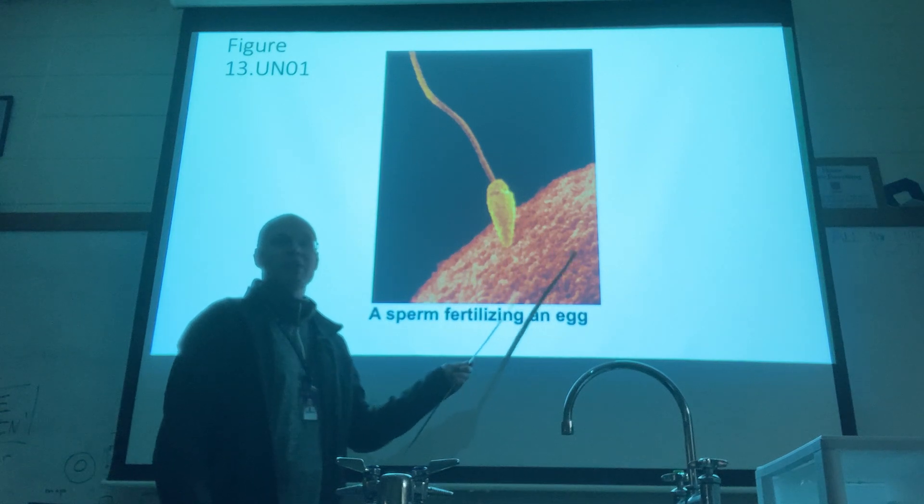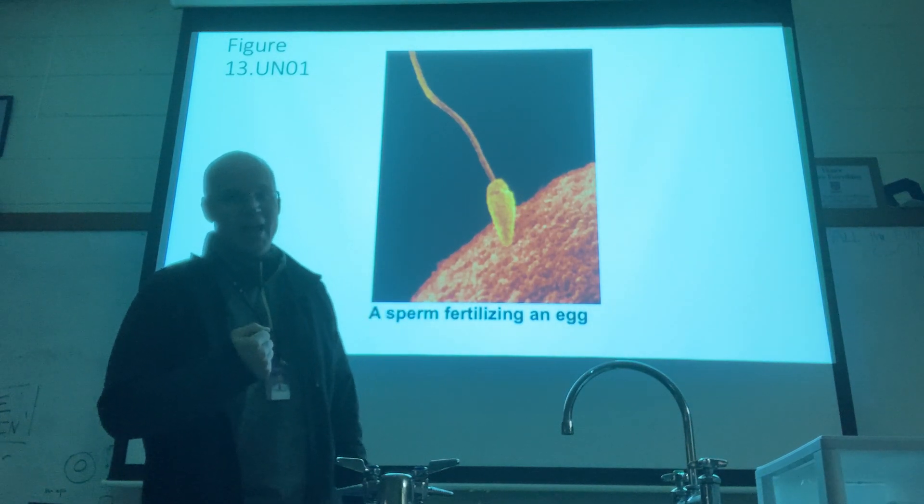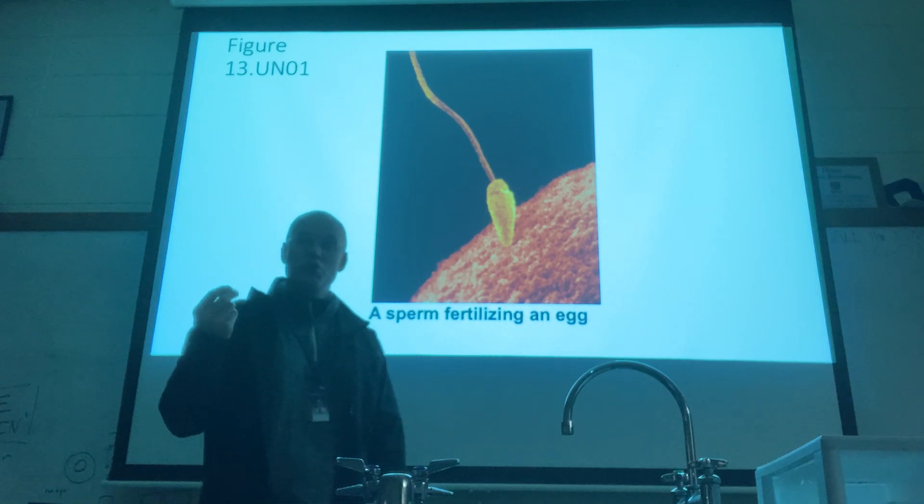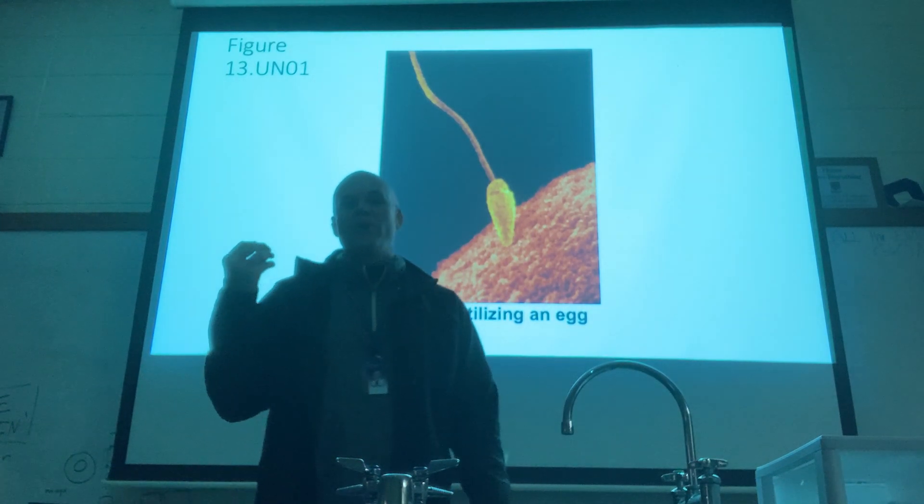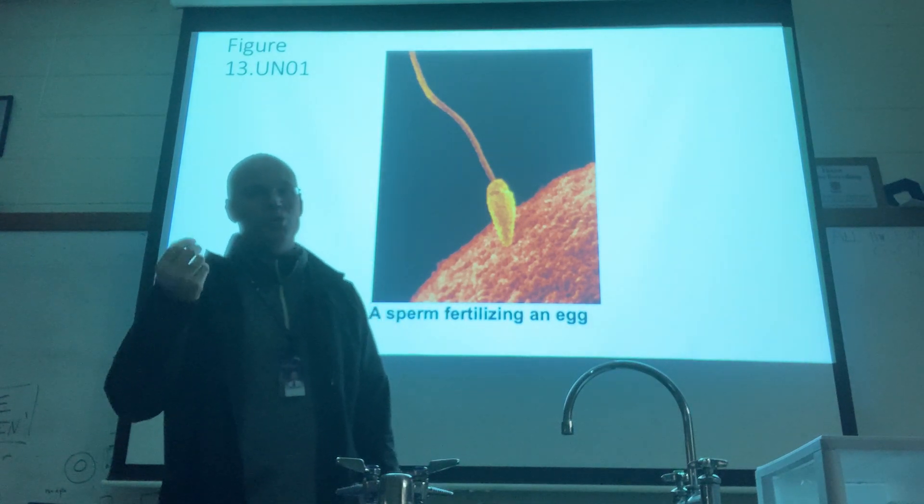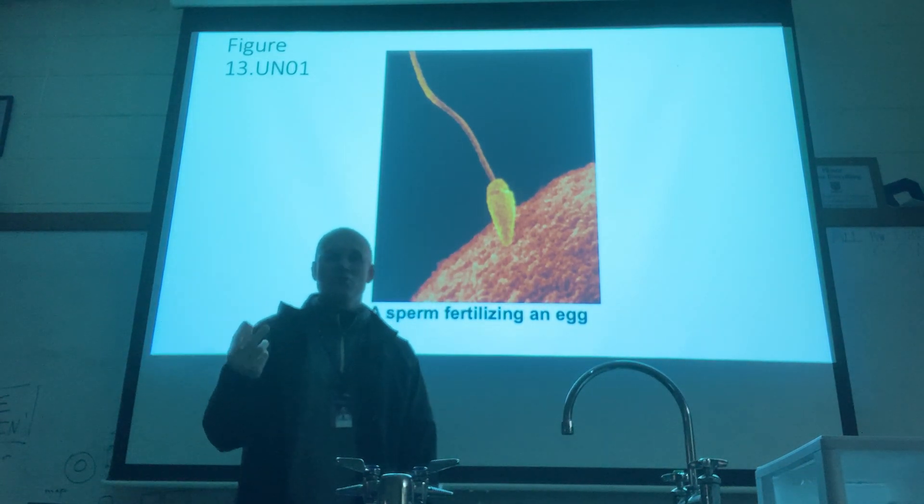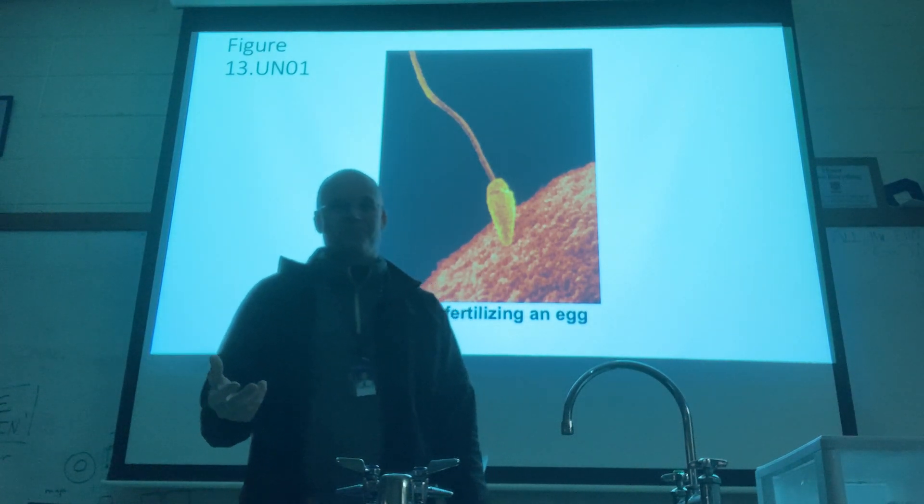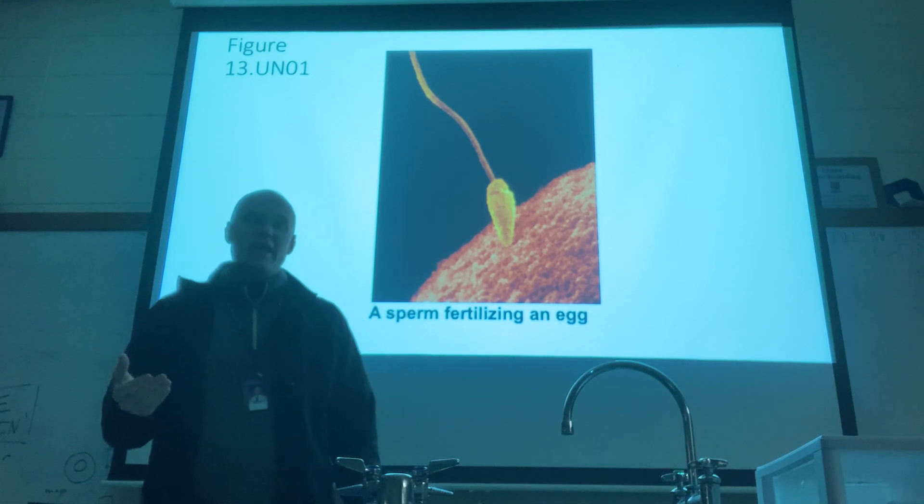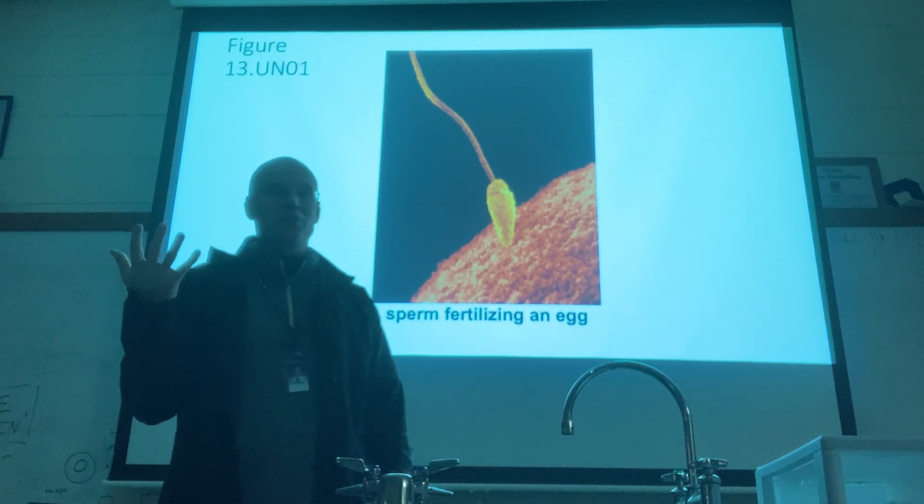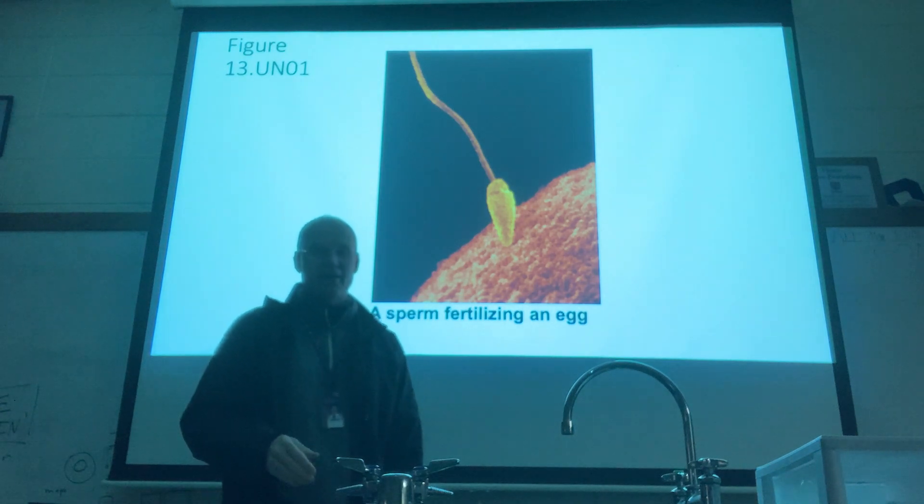When you have two sex cells or gametes, which is what sperm and egg cells are known as, when you have two gametes that fuse together, the sperm cell entering the egg cell, you have what is known as sexual reproduction. Sexual reproduction is a form of reproduction that involves the fusion of two gametes. The alternative is asexual reproduction, in which an organism will divide through binary fission in prokaryotes.